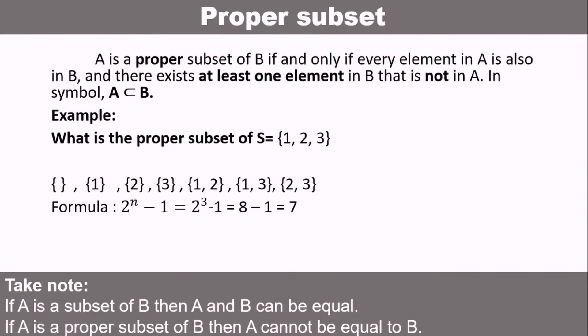Next is proper subset. The difference, to make it easier for you, is that it's like removing the elements that are inside. For example, {1,2,3} is not included here. What's included is from null set up to {2,3}. The complete set of elements is not included. That is the idea of subset and proper subset.